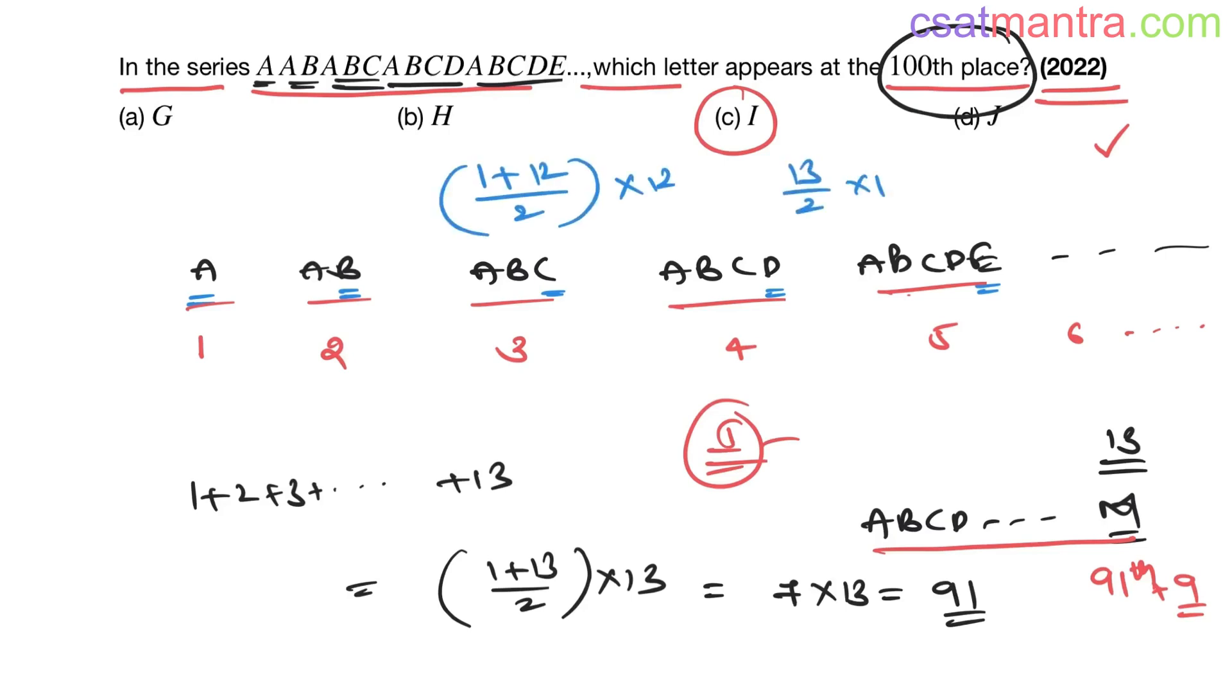But we need a hundred. You can have one more group, that is thirteen letters group. So seventy-eight plus thirteen, that is ninety-one. If you go for one more group, fourteen, it's crossing hundred. So till thirteen letters group you have ninety-one letters. Now nine more letters, start from A. Ninth letter is I.